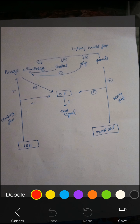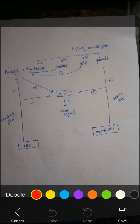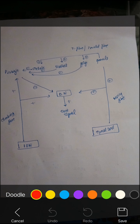The inferior olivary nucleus is excitatory to both the deep nucleus and also the Purkinje cells. The spinal cord input is excitatory to the granule cell and also excitatory to the deep nucleus.